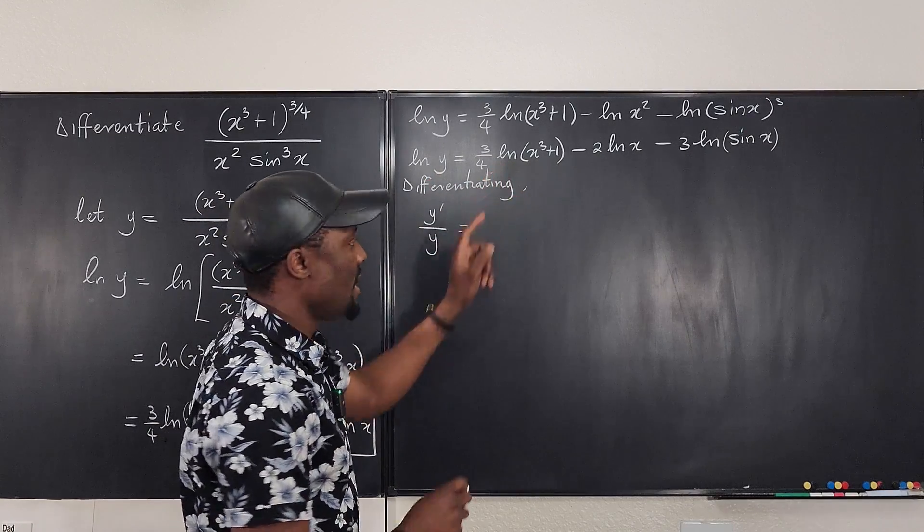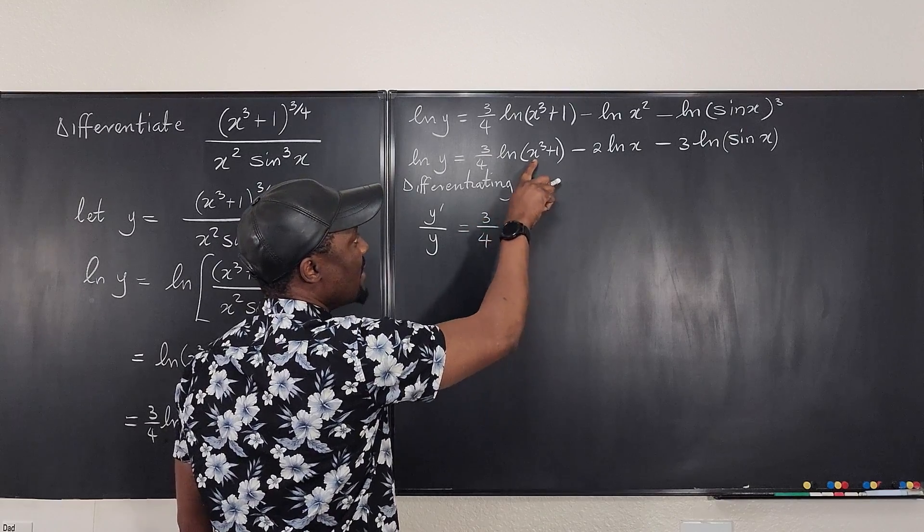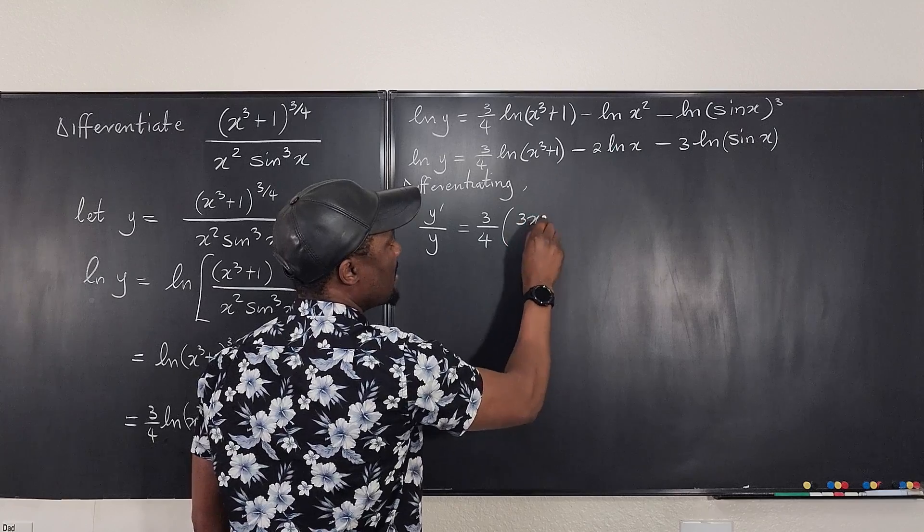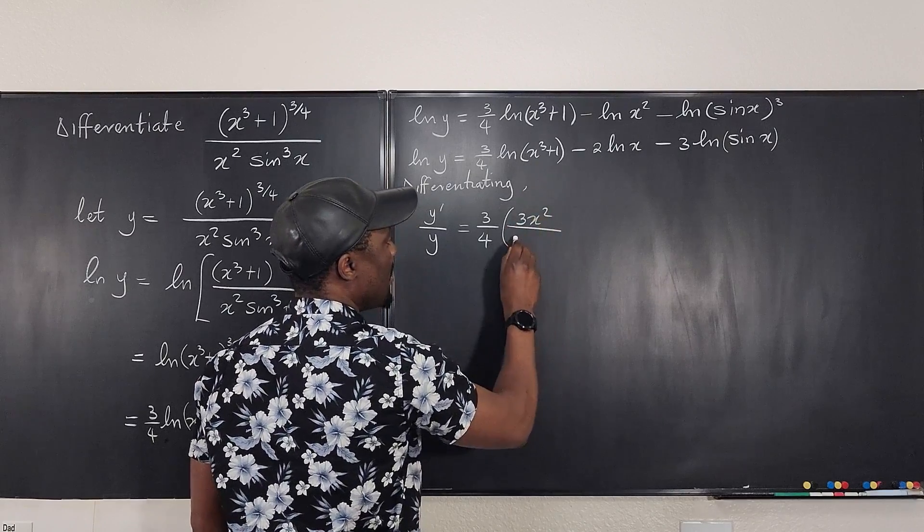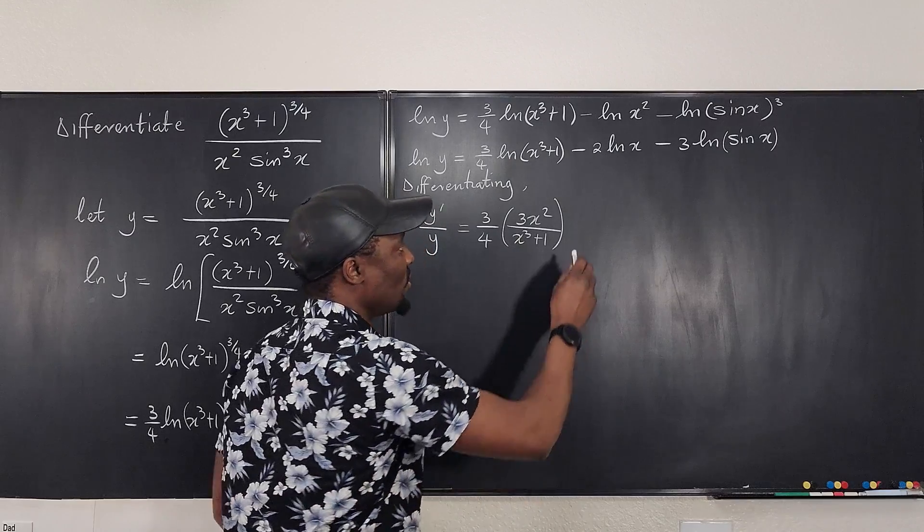I go here. Because this is a constant, I leave it as 3 over 4. Then the derivative of the argument is going to be 3x squared divided by the argument, x cubed plus 1. I'm done.